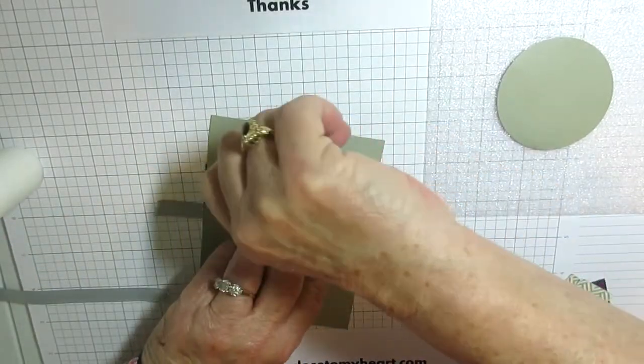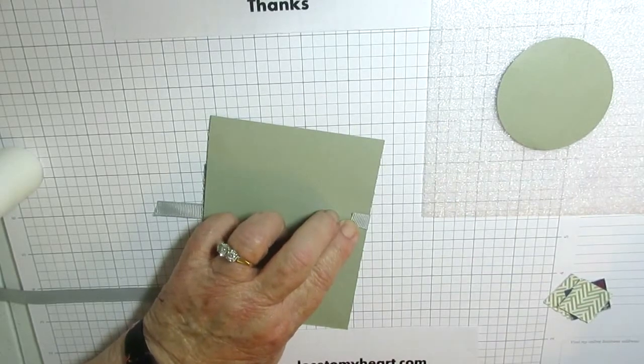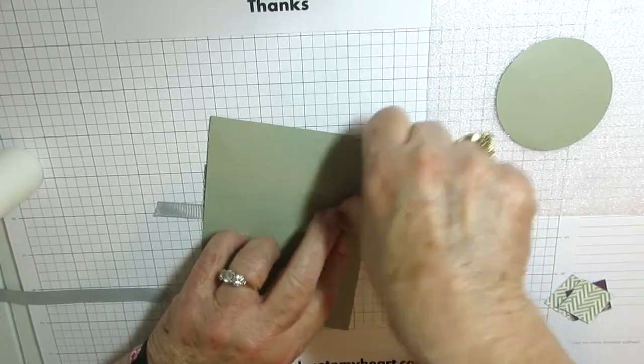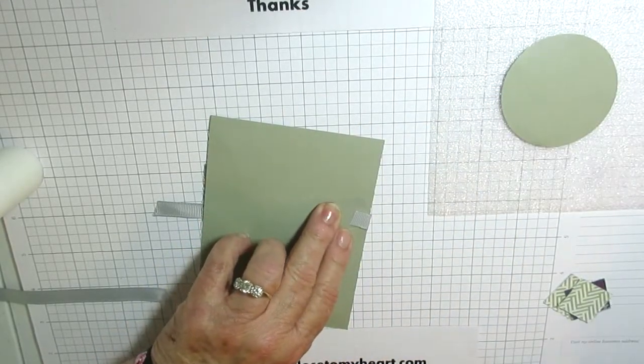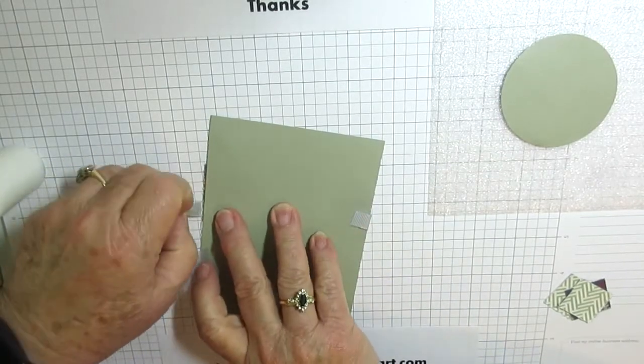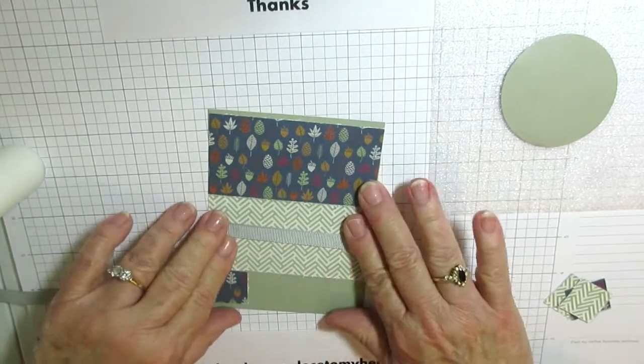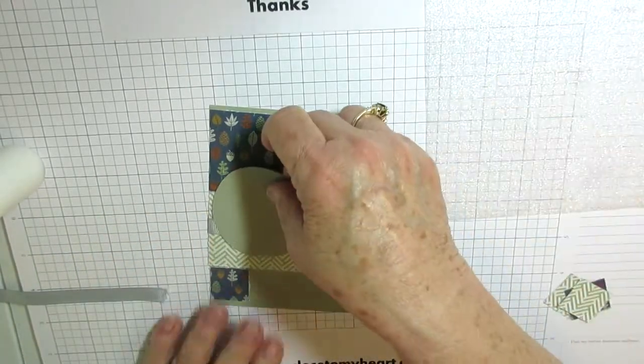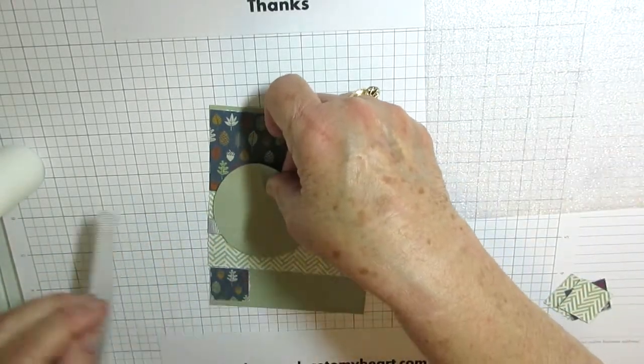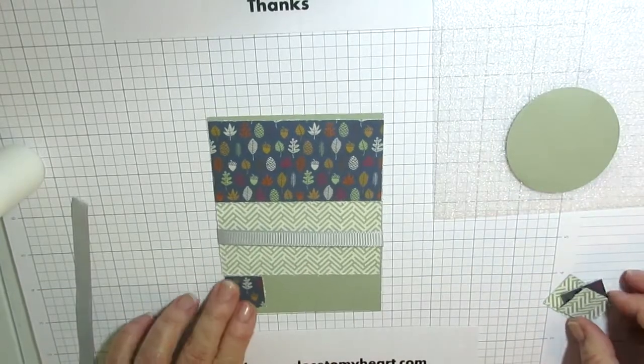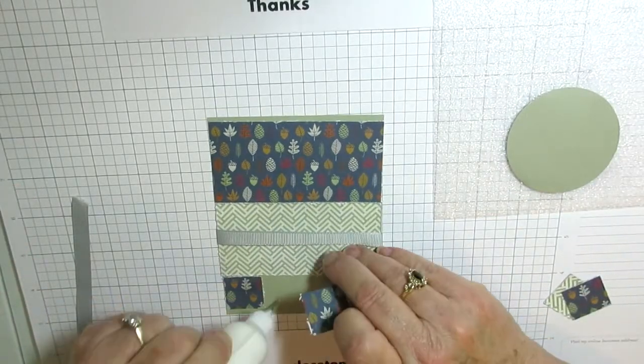This piece is going to go right here. And I'm going to tape the back down. And then my sentiment will be over here and I'll have a little bow right here.